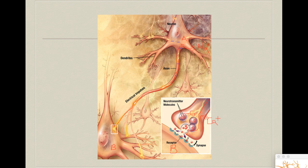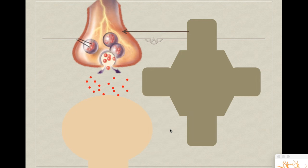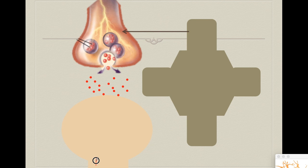Glutamate is then free to access neuron B and activate the glutamate receptors on its membrane. Calcium has come in, made the vesicles fuse with the terminal, and now glutamate is in the synaptic cleft ready to activate neuron B. However, we need very strict control over how long glutamate stays in the synaptic cleft.